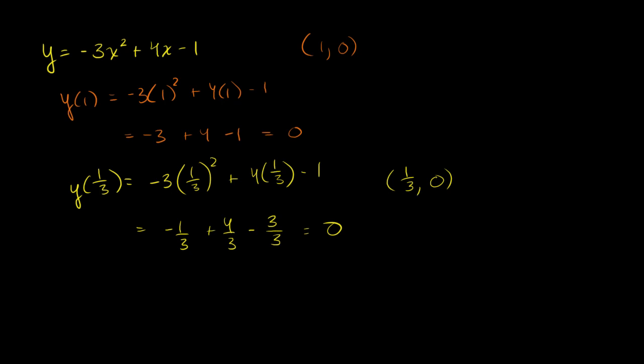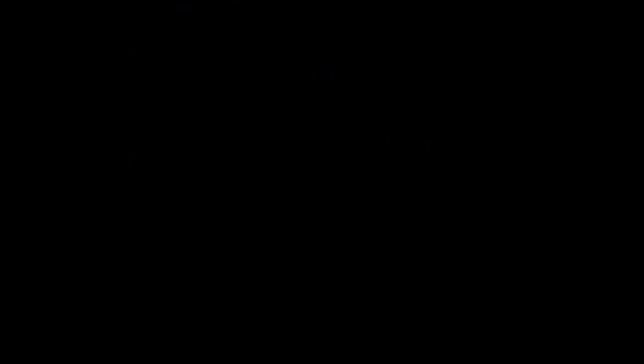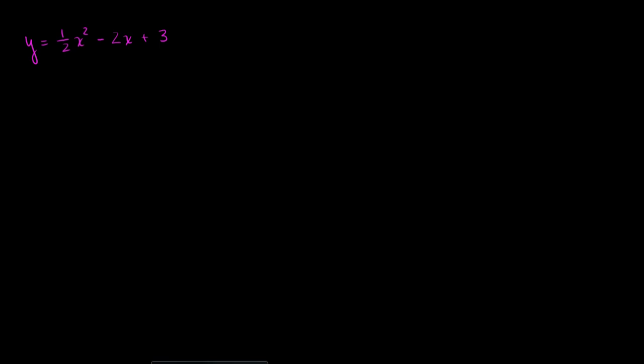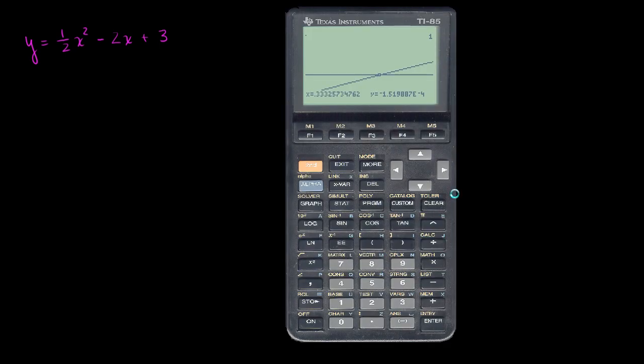Let's do another one. Let's say we have y equals 1 half x squared minus 2x plus 3. Let's see if we can get its roots or the zeros of this equation, where it intersects the x-axis. So let's get our calculator back. And we're going to have to zoom out of this thing. So let me do zoom. I think I can just do the previous zoom.